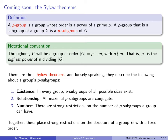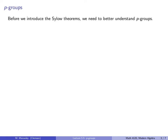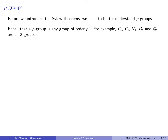Before we can introduce the CELO theorems, we need to better understand p-groups. Recall that a p-group is any group of order p to the n. For example, the trivial group C1, or C4 which has order 2-squared, or V4 which also has order 2-squared. D4 has order 8, as does Q4 — 8 is a power of 2, so these things are all 2-groups.